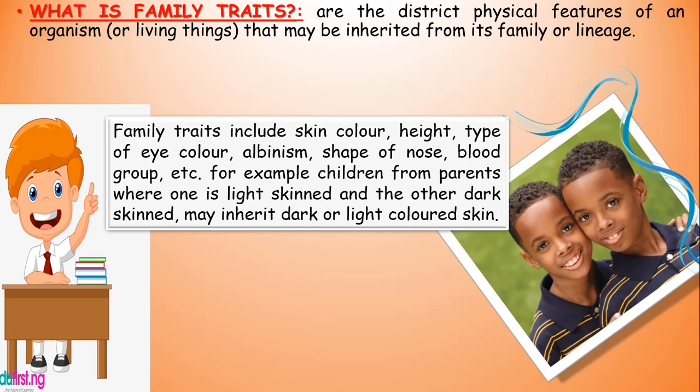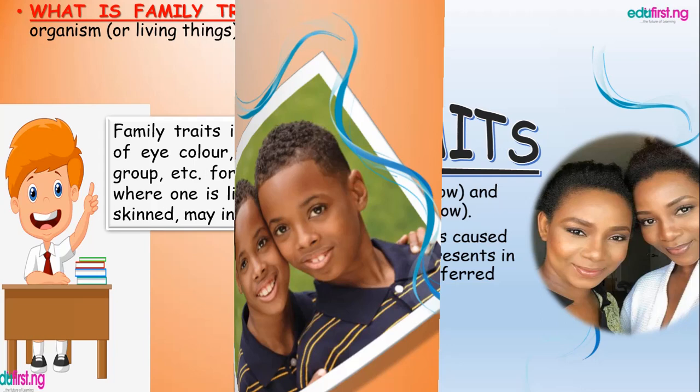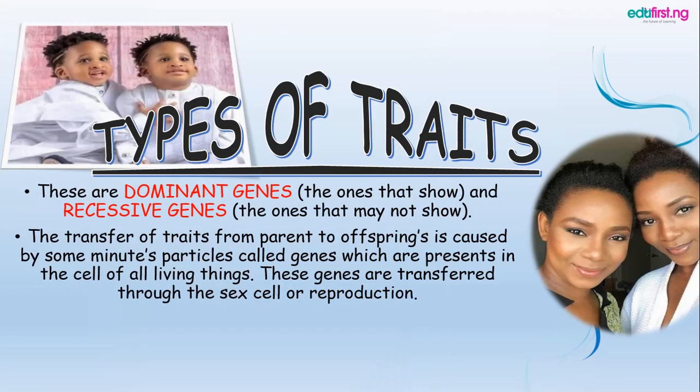...eyes color, the shape of nose, the blood group, color of skin, and so forth. We want to talk about the most important aspect, which is the type of trends, and these trends are mostly called genes.